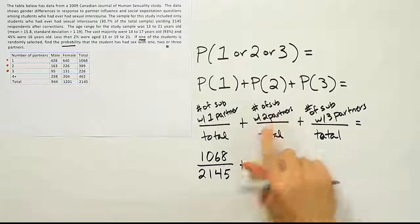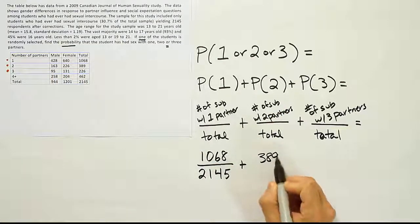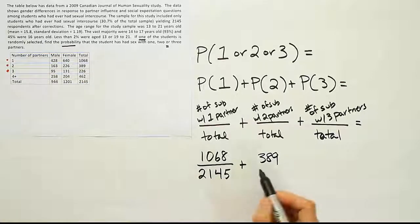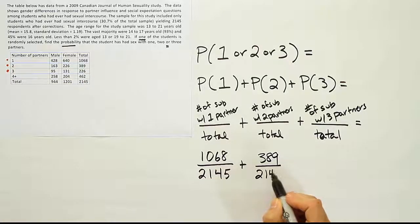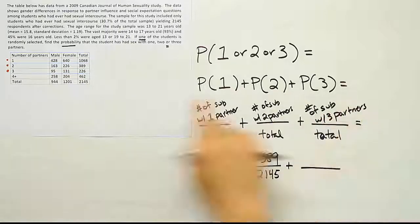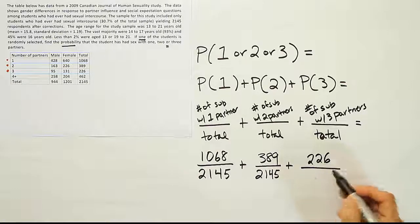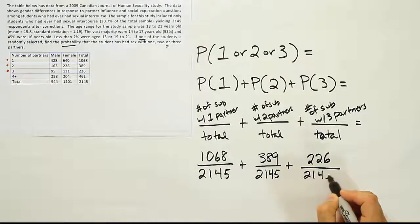Add to that the number of subjects with two partners. That will be 389, 389 divided by 2,145. And then finally, number of subjects with three partners. Number of partners, three. The total is 226 people, and that's 2,145.